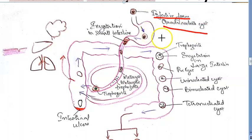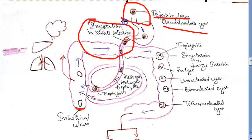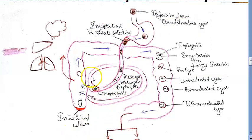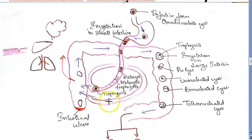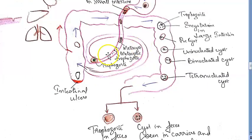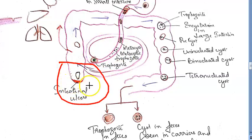From the stomach, in the duodenum and small intestine, excystation happens. What was eaten as a cyst now comes out of the cyst. It becomes a metacyst, then a trophozoite — back to its trophozoite form. So between the cyst and the trophozoite, you have the metacyst. This trophozoite then reaches the large intestine at the ileocecal junction.